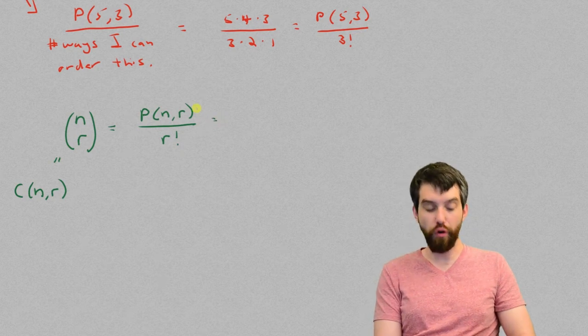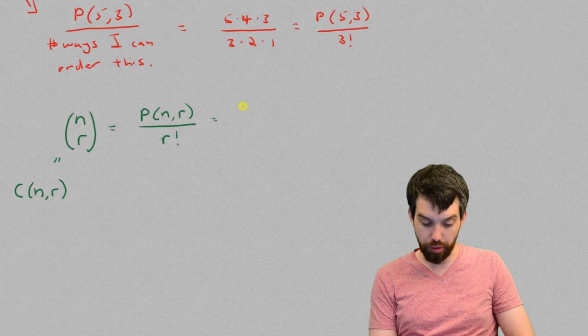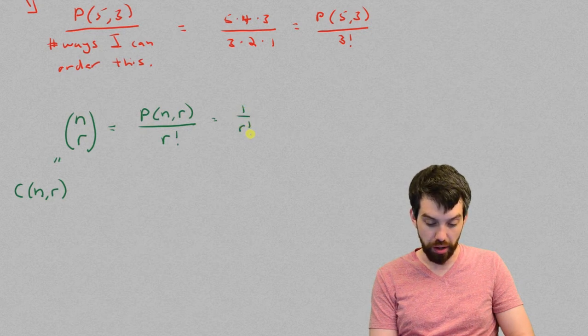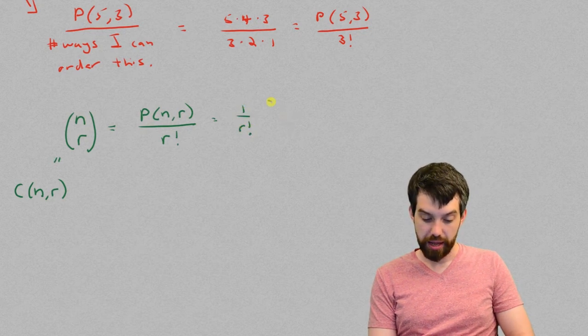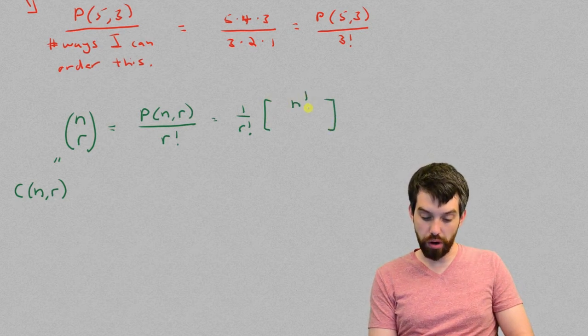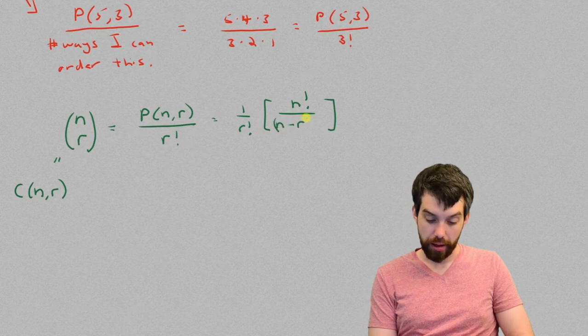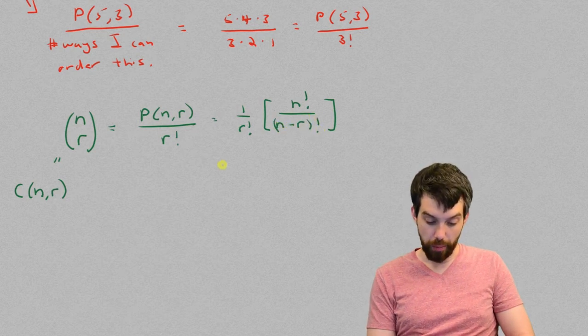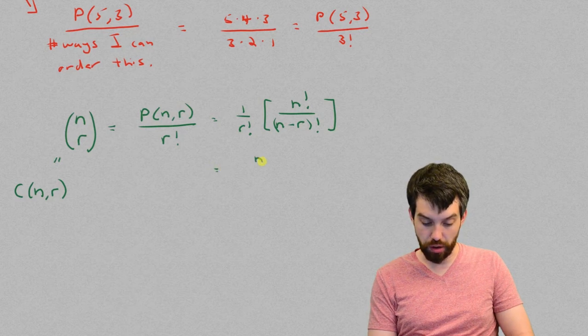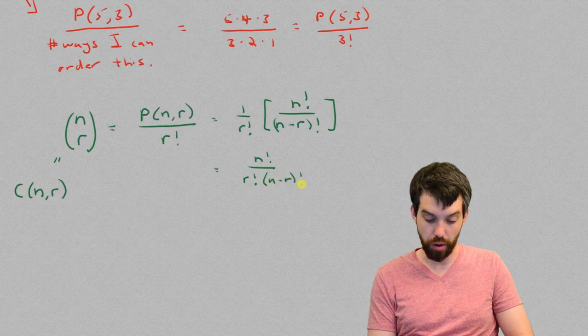And then since I have a formula for this picking formula, we know that that was going to be, I'll leave the one over r factorial on the bottom of the front, and I'll just deal with the pick portion. This was an n factorial on the top divided by n minus r factorial. Or perhaps if I want to clean it up a little bit, n factorial on the top divided by r factorial on the bottom multiplied by n minus r factorial also on the bottom.